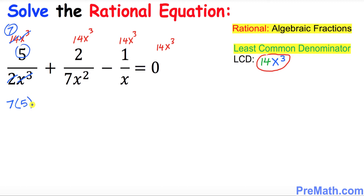For the next term: 7 divides into 14 twice, and x³ divided by x³ simplifies to leave x, so we get 2x times the numerator.